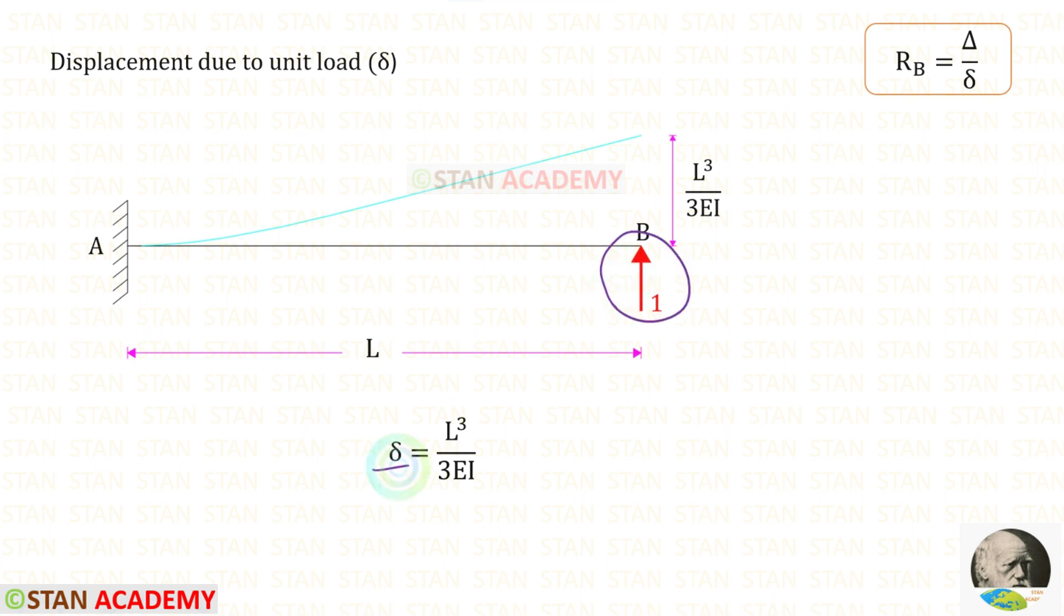Delta is the deflection due to the unit load. We know that if in the cantilever beam a load w is acting in the free end, the formula to find the deflection in the free end is wl cube upon 3 ei. Here w is 1, so it will be l cube upon 3 ei.